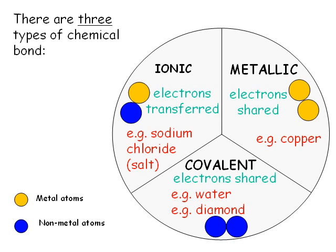In this topic we'll be exploring how chemical bonds are formed between atoms, holding them together in substances. Atoms are either metals or non-metals, and therefore there are three types of bond possible.